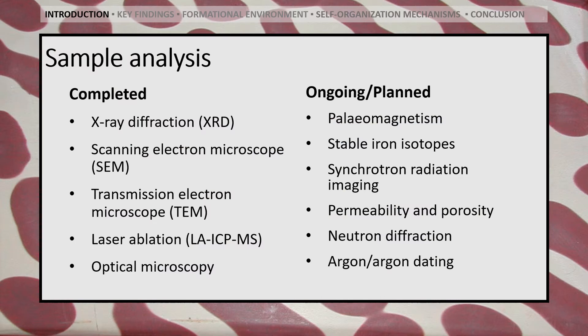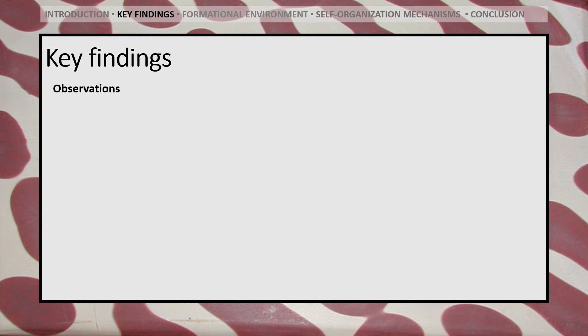In order to determine the mechanisms underlying the formation of iron banding in zebra rock, this study has undertaken a wide range of analyses as detailed on the slide, with many more planned for the near future. However, as we lack the time to discuss every finding in detail, we will focus on the key conclusions so far.